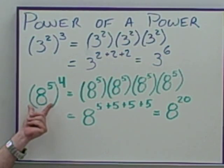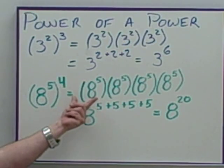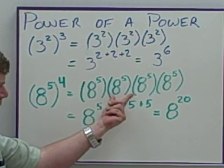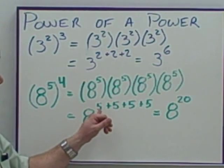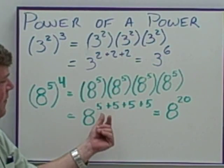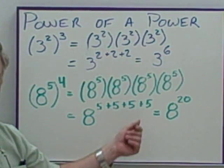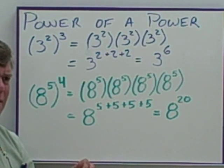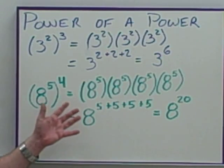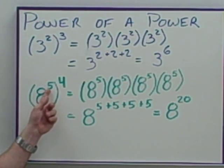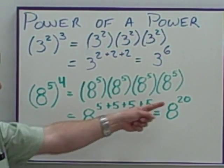Here's another example where I have 8 to the 5th to the 4th power, which means I'm doing 8 to the 5th times 8 to the 5th times 8 to the 5th times 8 to the 5th, which means I'm going to add those exponents: 5 plus 5 plus 5 plus 5, which is 5, 10, 15, 20. It sounds like I'm doing the 5 times table. I could just multiply this exponent by that exponent and get 20. 5 times 4 gives me 20.